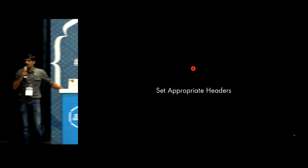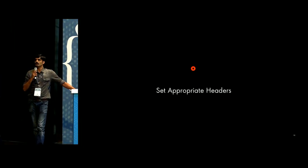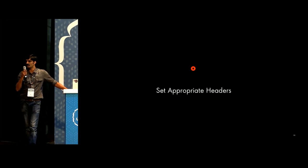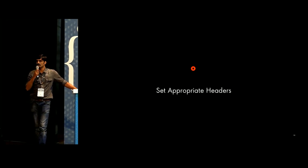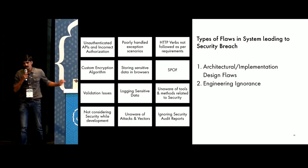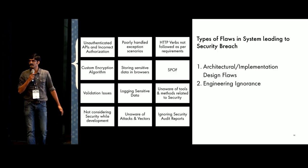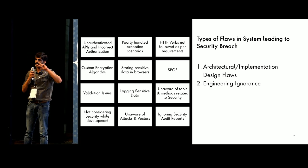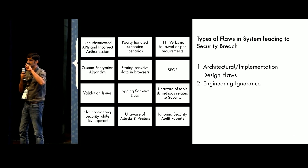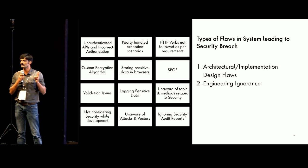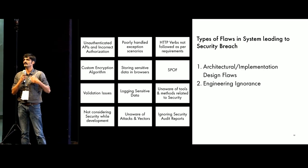Set appropriate headers to achieve all these things. It could be related to XSS attacks — just set appropriate headers for that. So what are the different types of flaws in the system that we usually see? These are some examples, but primarily two categories: one is architectural decisions that were taken, and second is engineering ignorance while developing it.